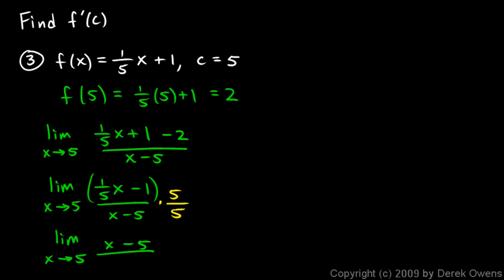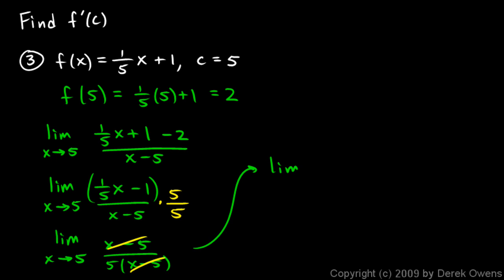On the bottom we write it as 5 times x minus 5. The (x minus 5) factors cancel, leaving the limit as x approaches 5 of 1/5, which is clearly 1/5. The limit of a constant is just that constant.